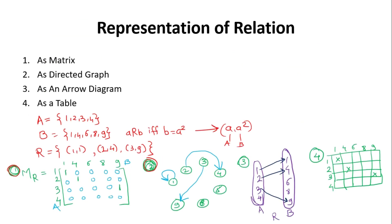There are four possible representations of a relation: as a matrix, as a directed graph, as an arrow diagram, or as a table. Using the same example where A={1,2,3,4}, B={1,4,6,8,9} and relation R = {(1,1),(2,4),(3,9)} where b equals a squared.